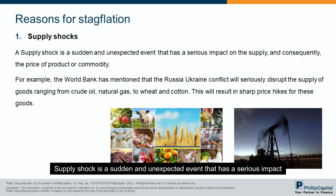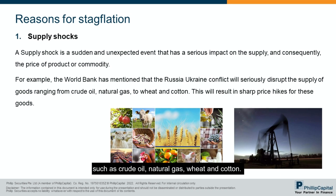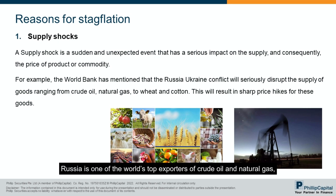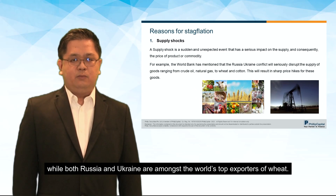A supply shock is a sudden and unexpected event that has a serious impact on the supply and consequently the price of a product or commodity. The Russia-Ukraine conflict has disrupted the supply of many commodities, such as crude oil, natural gas, wheat, and cotton. Russia is one of the world's top exporters of crude oil and natural gas, while both Russia and Ukraine are amongst the world's top exporters of wheat.